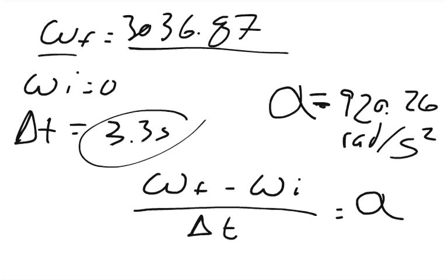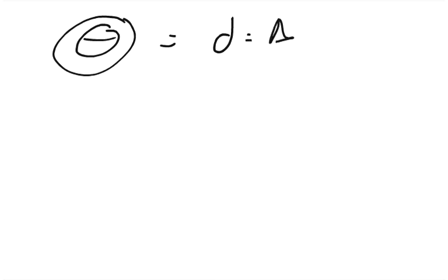And then it wants to know, determine the angle in radians through which the drill rotates during this period. So we're looking for the angular displacement. This in linear kinematics is analogous to displacement or change of x. So there's a bunch of ways you can find the change of x.